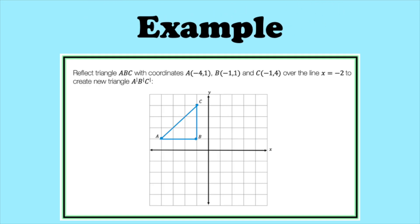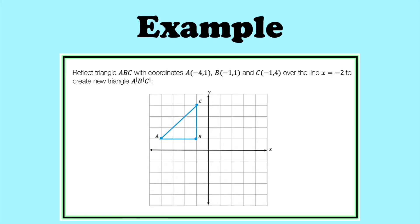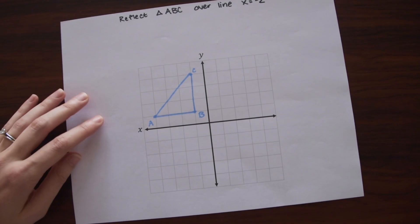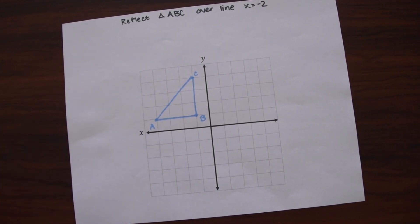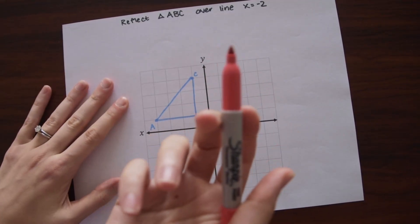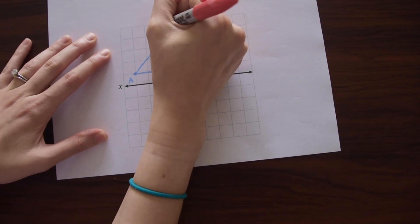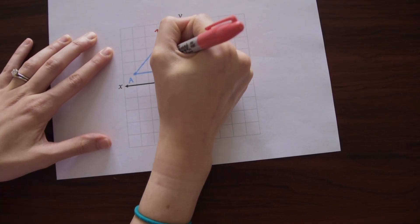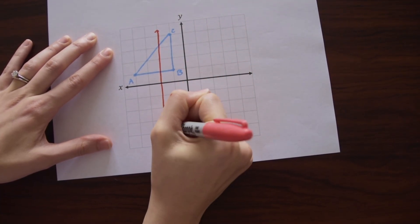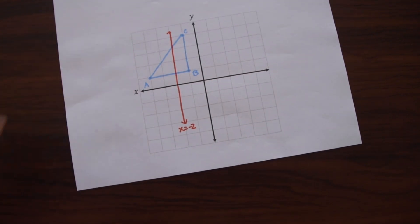We're going to be reflecting triangle ABC over the line X equals negative two to create triangle A prime, B prime, C prime. The reason this is a little more complicated is because we end up overlapping our shape. So it's like the shape is kind of on itself. So first, to answer this question, let's draw out what X equals negative two looks like. So here's negative two, and it ends up being this vertical line. So X equals negative two.